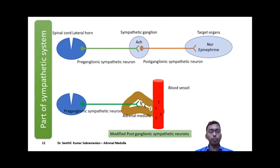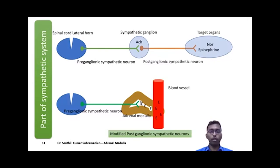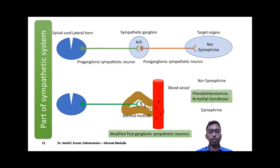The preganglionic sympathetic neuron directly acts on the adrenal medulla. The adrenal medulla cells — the chromaffin cells — are considered modified postganglionic sympathetic neurons. Normal postganglionic sympathetic neurons secrete norepinephrine at the level of target organs. However, these modified sympathetic neurons secrete epinephrine directly into the circulation. This difference is mainly because of the enzyme phenylethanolamine N-methyltransferase (PNMT), which transfers a methyl group to norepinephrine to form epinephrine.